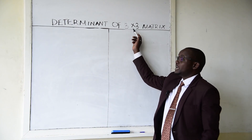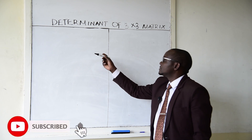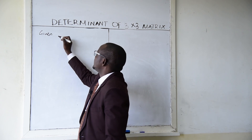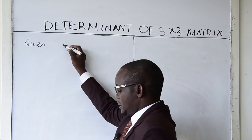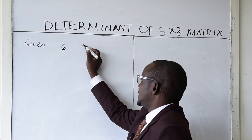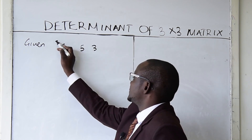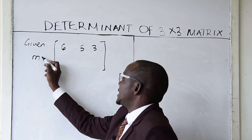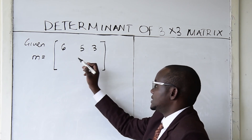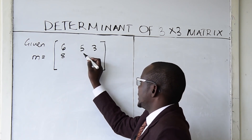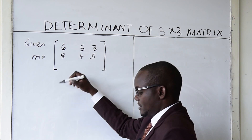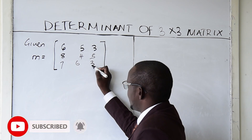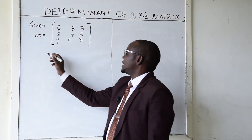Let's learn about the determinant of a 3 by 3 matrix. For instance, you can be given matrix M as: M = [[6, 5, 3], [8, 4, 5], [7, 6, 3]]. You are told to find the determinant of this matrix.